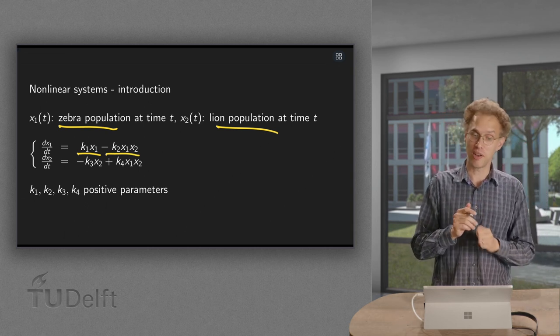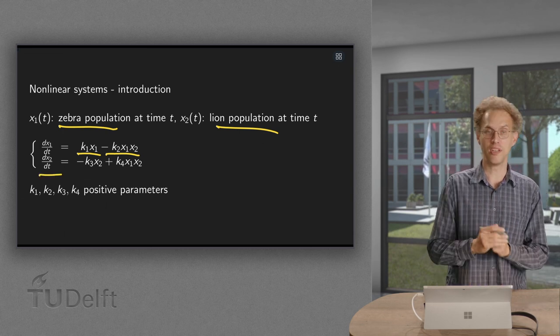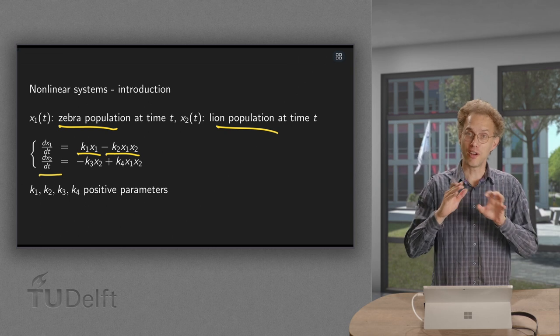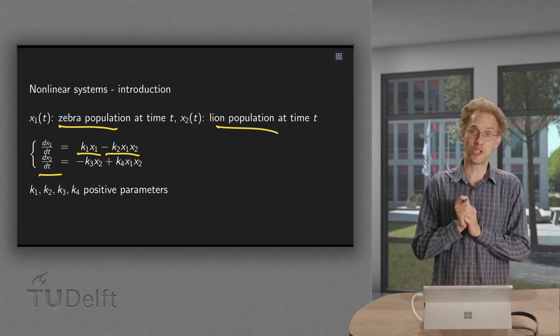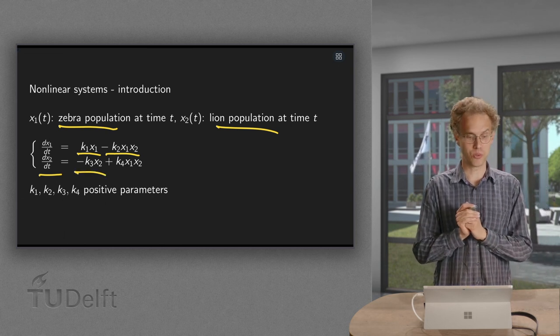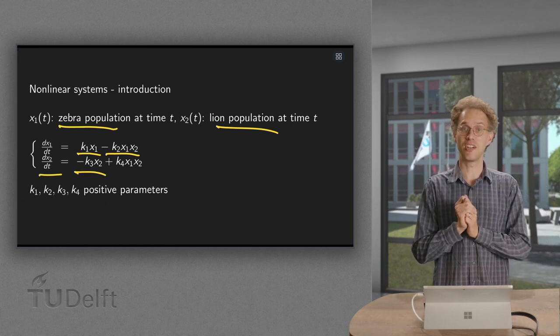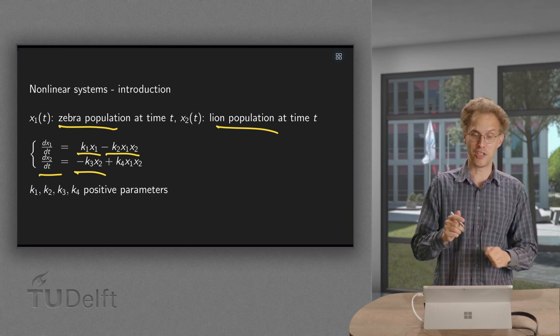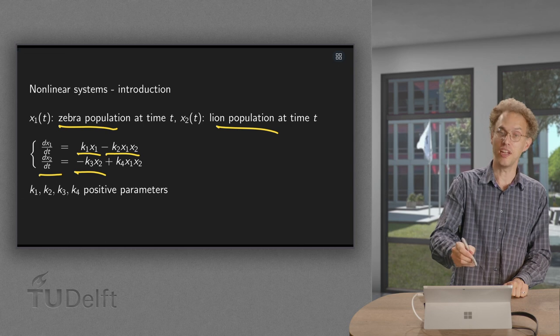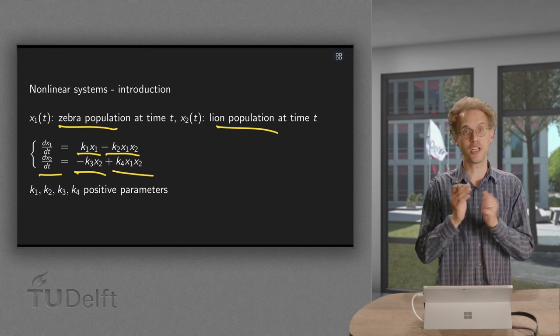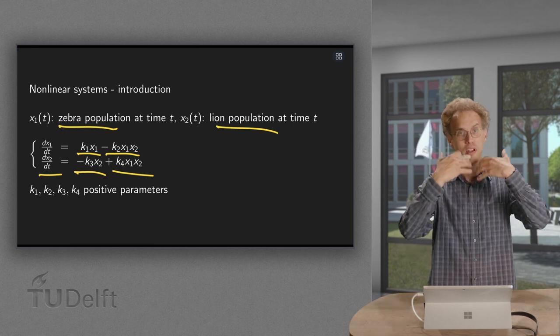Now we move on to our lions, dx2/dt. What happens with our lions? Well, if there are no zebras, lions don't eat grass, so they have a problem and will go extinct: dx2/dt equals minus k3 times x2. However, if there are zebras present, then you get a term k4 times x1 times x2, and they will start to grow again.